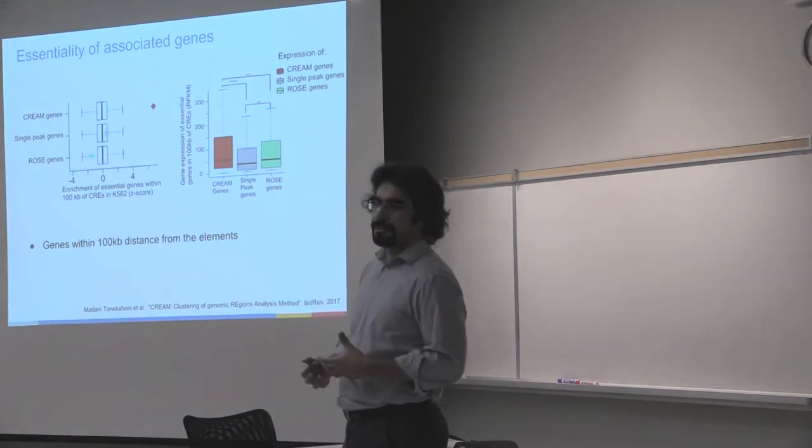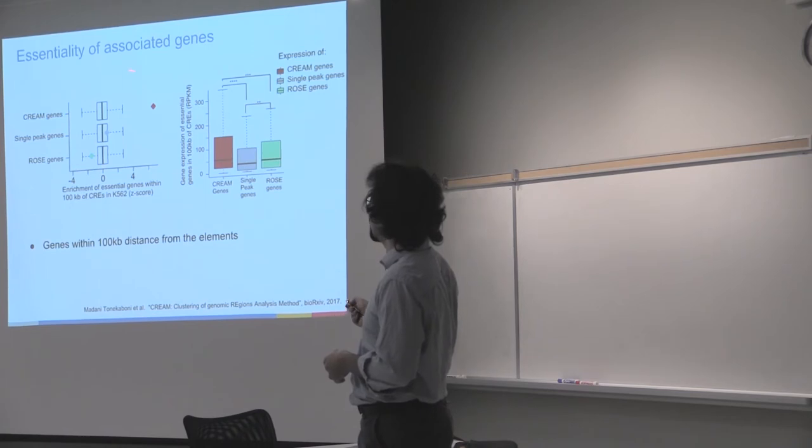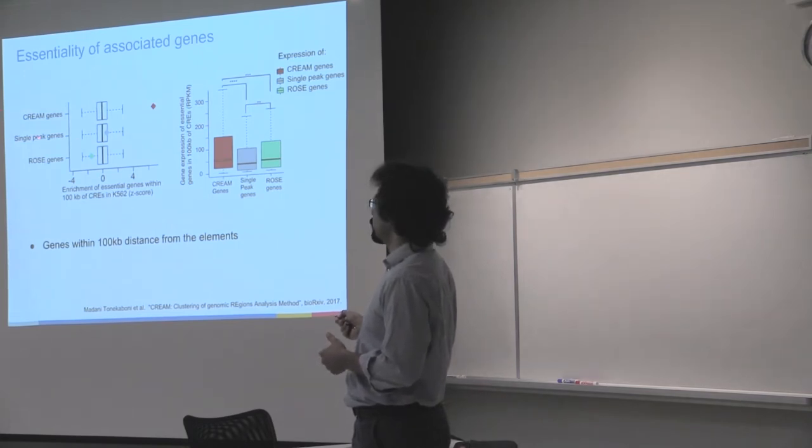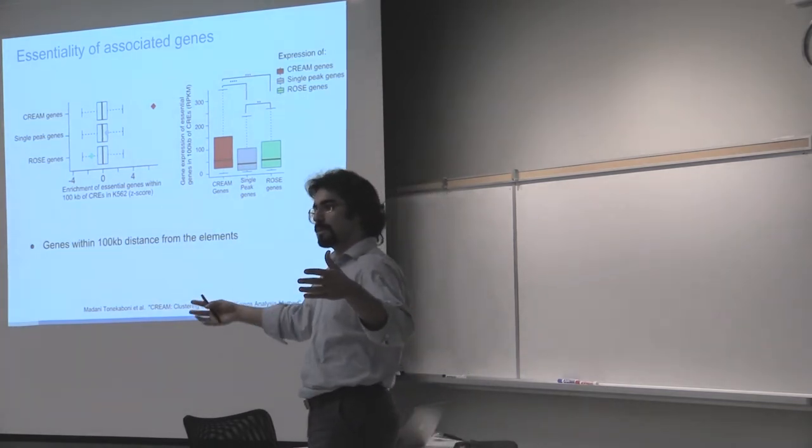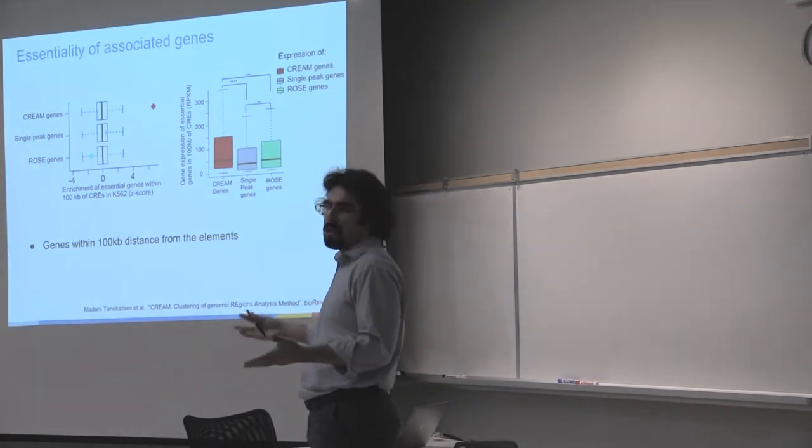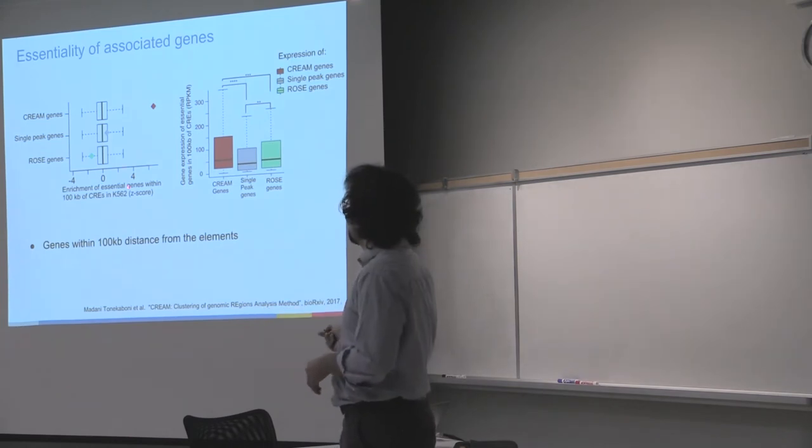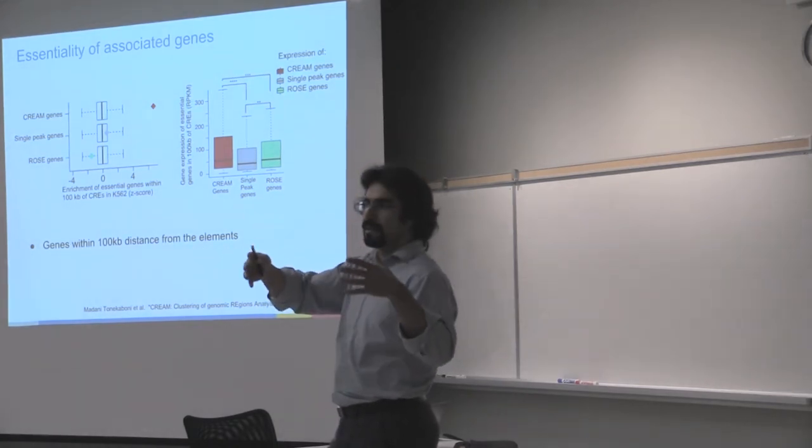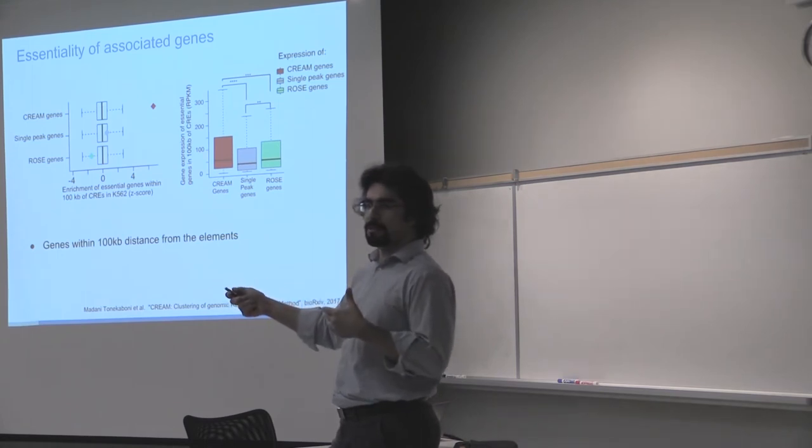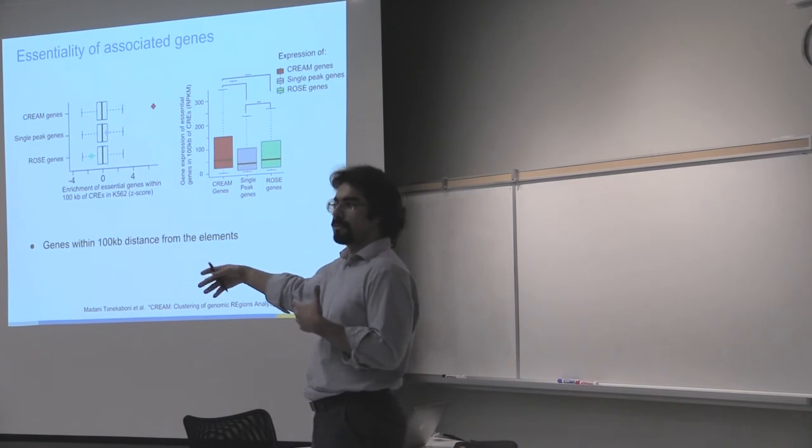Then we looked at the essentiality of the genes. If we get the permutation-based enrichment of essential genes within CREAM-identified cores—so we call it CREAM genes—and single peak genes or individual CRE genes, and ROSE-identified core genes, we can see that CREAM-identified genes which are significantly essential are better than null distribution. We expected that single peaks would be random because if you consider the whole space of single cis-regulatory elements, you cover the whole protein-coding landscape, maybe 87% or something. But ROSE is actually worse than random, and this is because of the specificity or large regions that it identifies. It may be for some regions close to essential genes, but there's a lot that is not relevant to the fate or biology of cells.